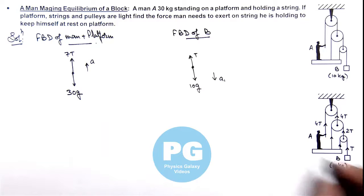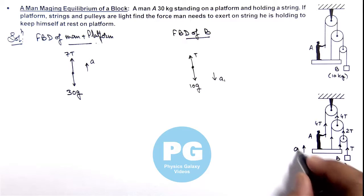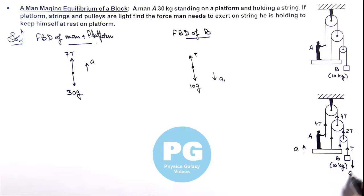As you can see, if man is going up at ay and this block is coming down at ay1, then we can write in this situation on this system the total force acting is 7T. So we can write 7T multiplied by ay minus T multiplied by ay1 is zero. So here we are getting the value of ay1 to be equal to 7ay, that is the constraint relation between their acceleration.